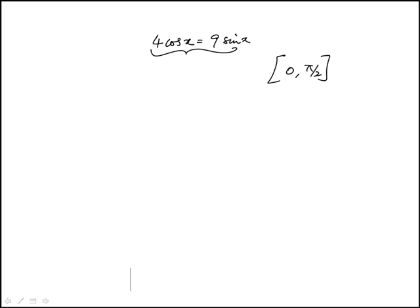The key thing to notice is that a tangent is kind of hidden here. If I move the 9 here, cosine x over there, I have sine x over cosine x is 4 ninths, which is tangent x.